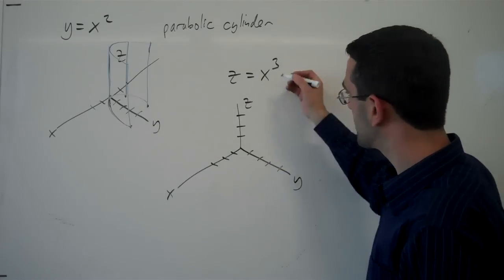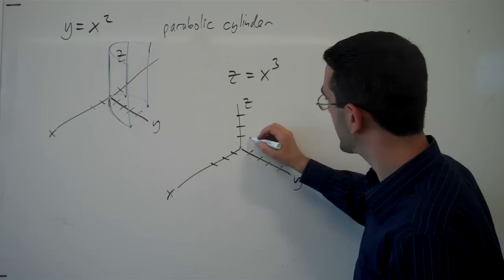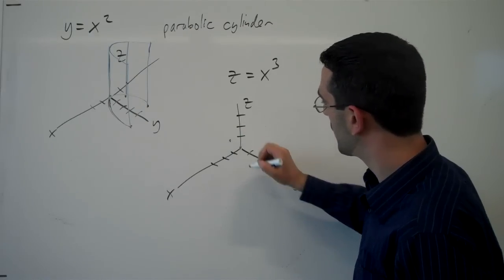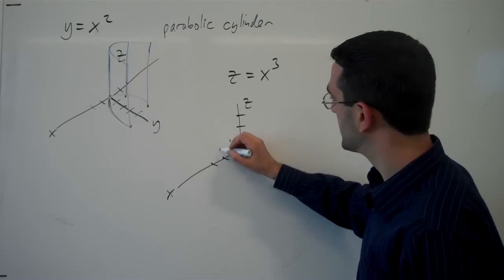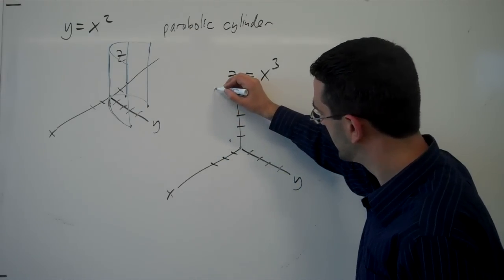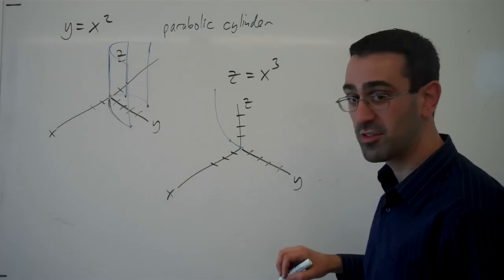So for example, if x was 0, z would be 0. If x was 1, z would be 1. If x was 2, z would be 8. Right? So we're getting sort of that curve shape that way.